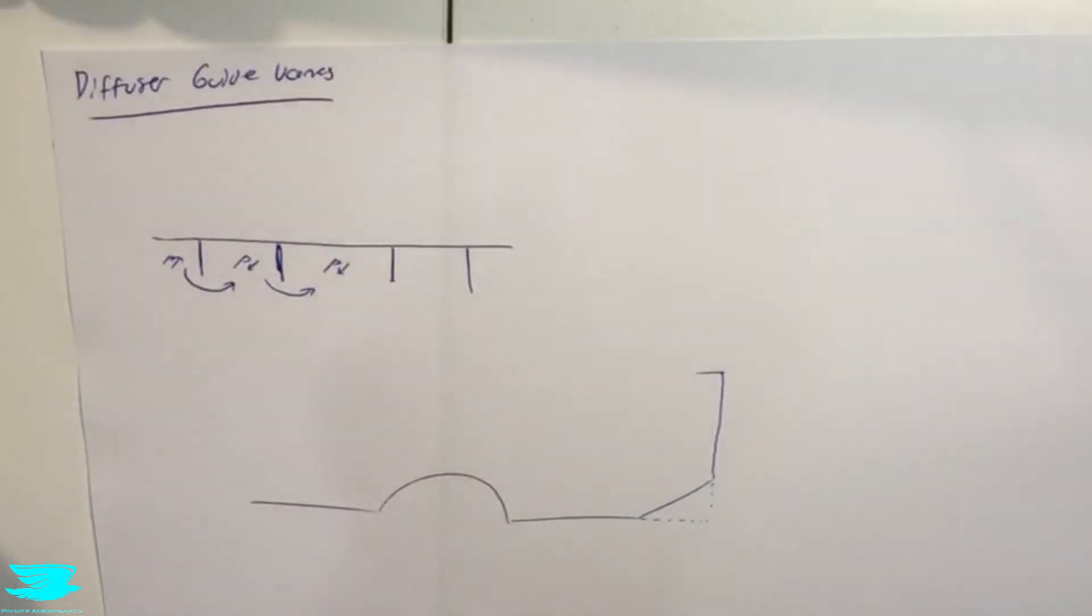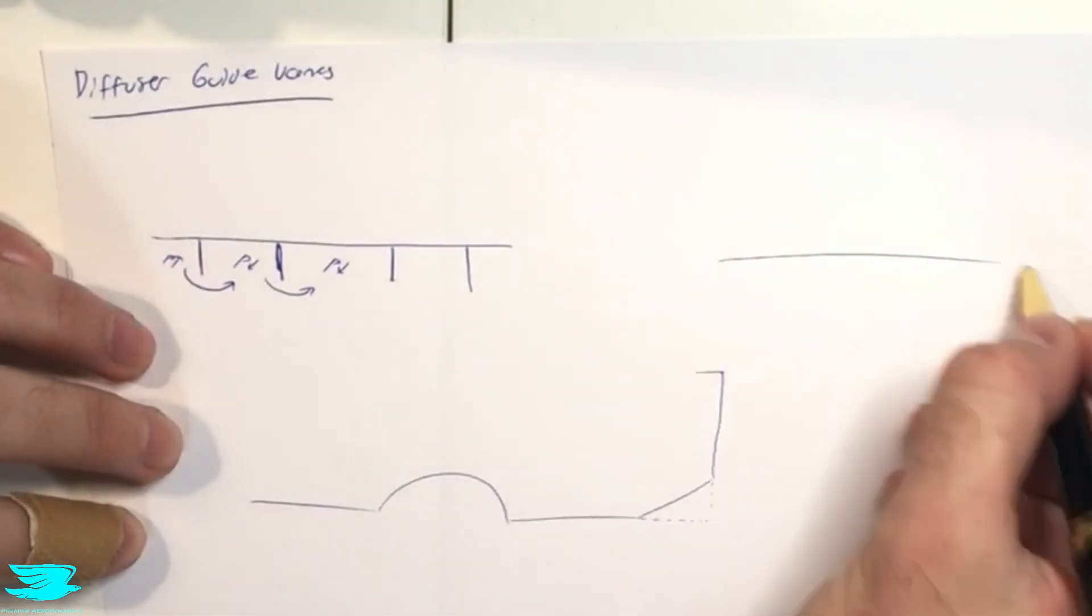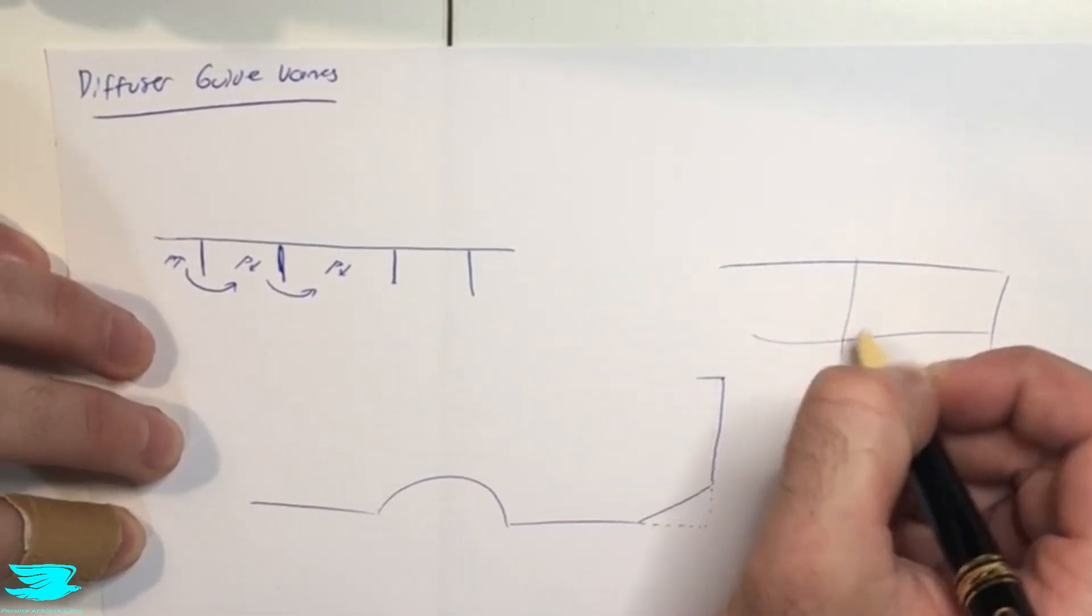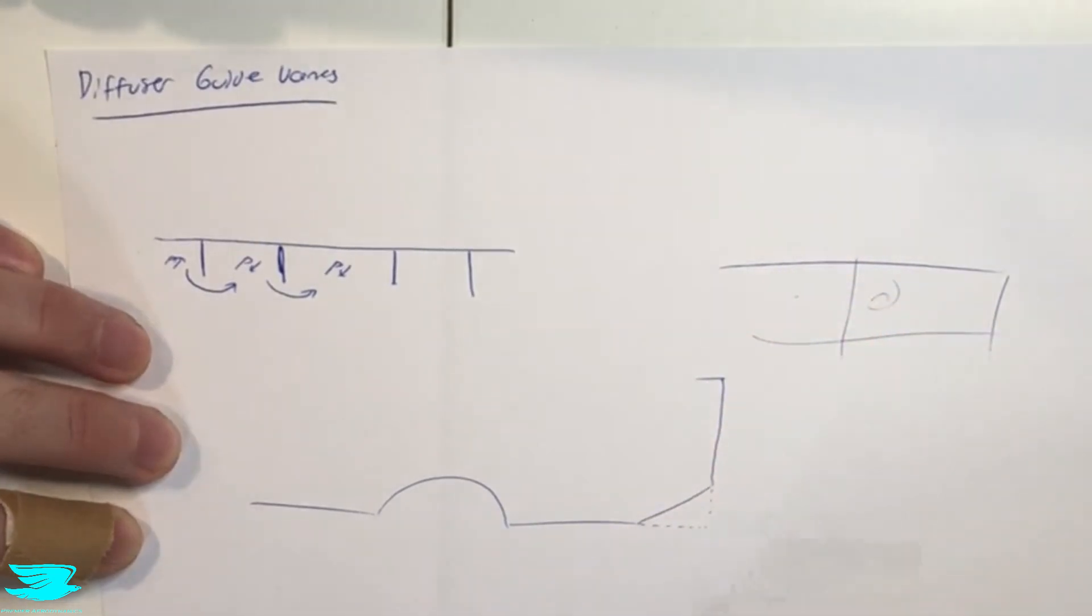They pretty much just segregate the flow. So they are very much akin to wing fences. If you have a wing going along on an airplane, and then you have a fence going along here to segregate the flow that's happening here to the flow that's happening here.